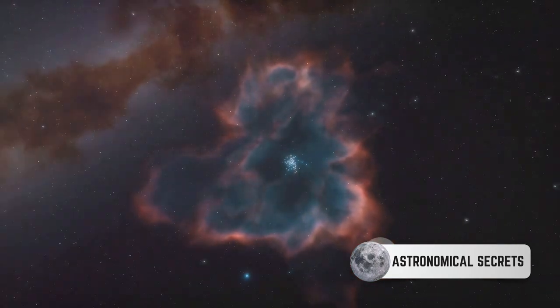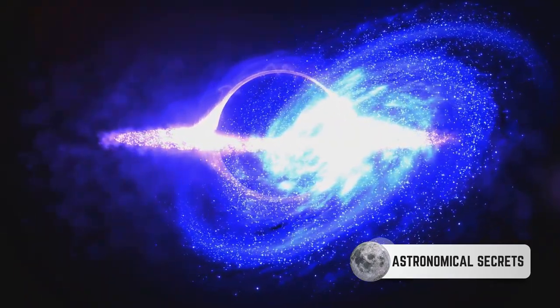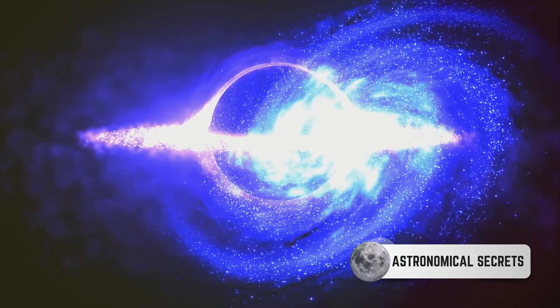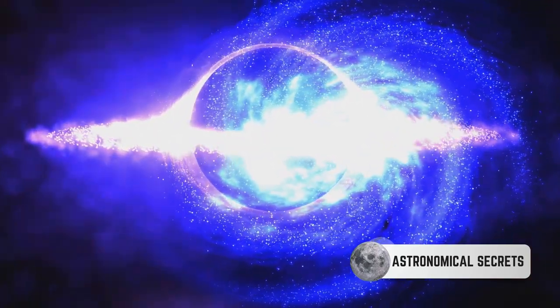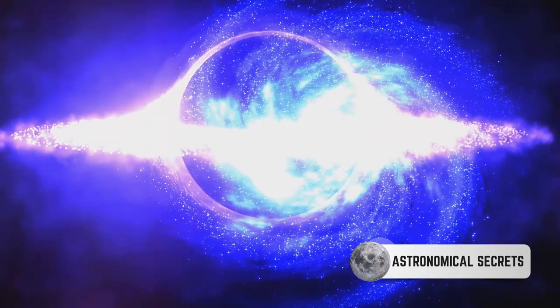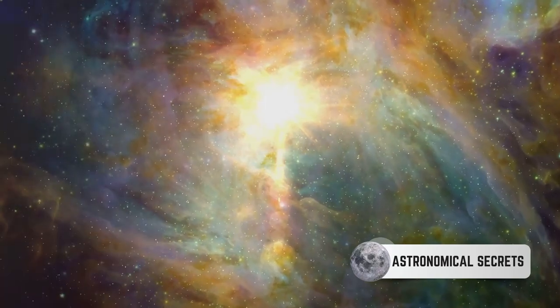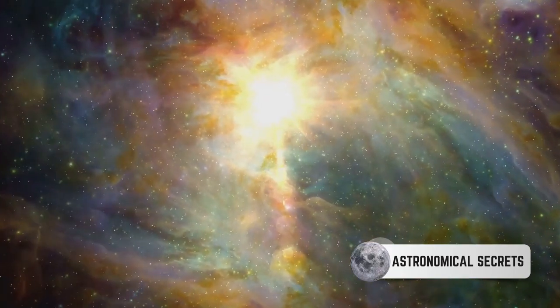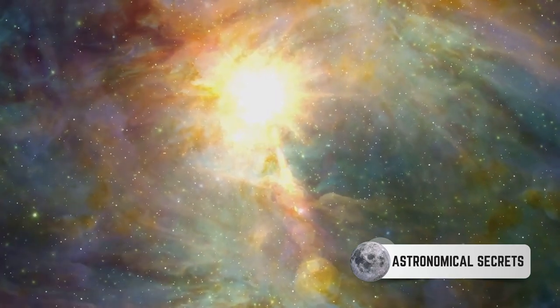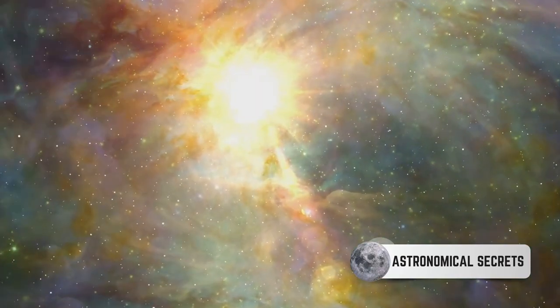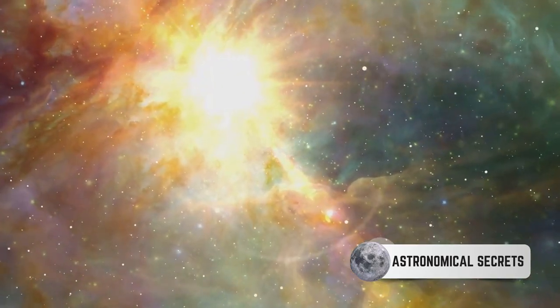Now you might be wondering why these regions are so brightly colored. The answer lies in the energy levels of the ionized hydrogen. When the electrons in the hydrogen atoms absorb energy from the starlight, they jump to a higher energy level, but they can't stay there for long. They soon fall back down, releasing energy in the form of light. The color of this light depends on the energy level the electrons drop from, resulting in the stunning reds and pinks we associate with these regions.